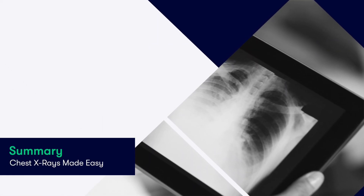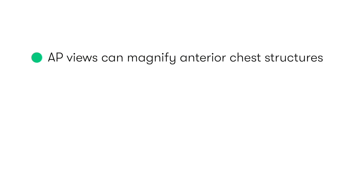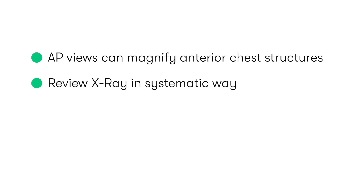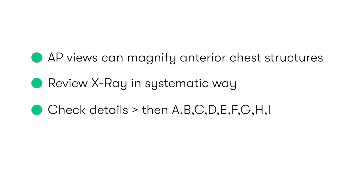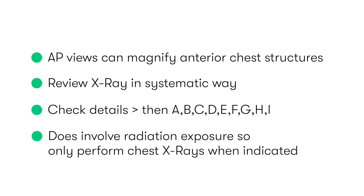In summary of what we've covered in this tutorial: we covered the different views that we can use, and how AP views can magnify the anterior chest structures such as the heart. We also spent some time looking at the systematic way in which we can review the chest x-ray. So after performing the general check, we can use the mnemonic A, B, C, D, E, F, G, H, and I to analyse the quality of the image and then the various anatomical regions, before finally coming up with our impression and diagnosis. And lastly, we discussed the pros and cons of chest x-rays, and importantly how the fact that we are exposing the patient to radiation — albeit a very low dose — means that we should only perform this investigation when absolutely indicated.